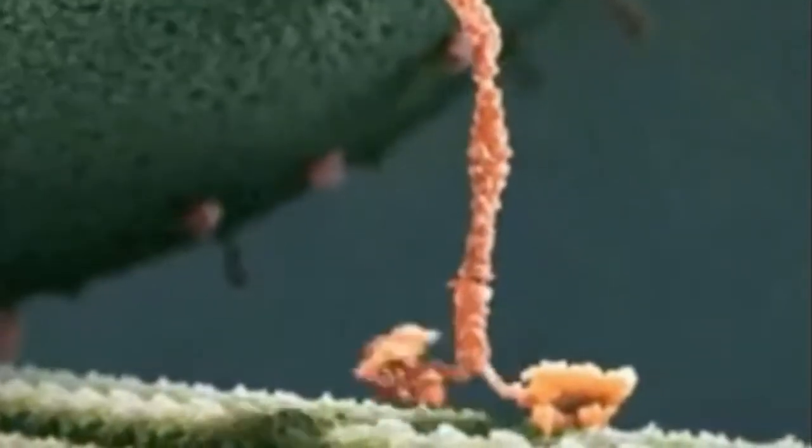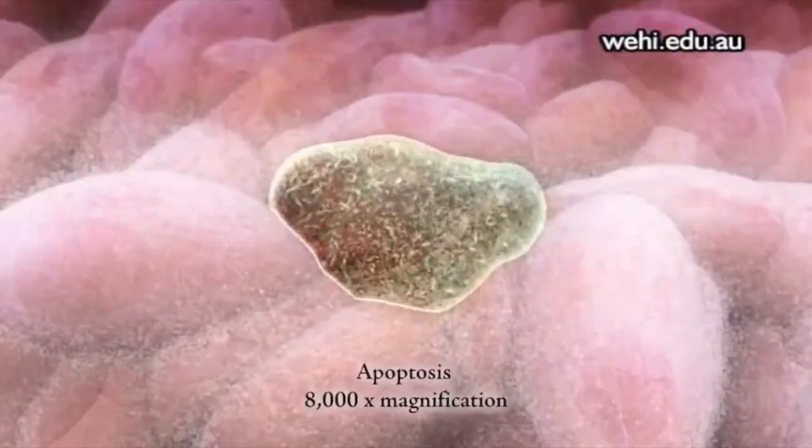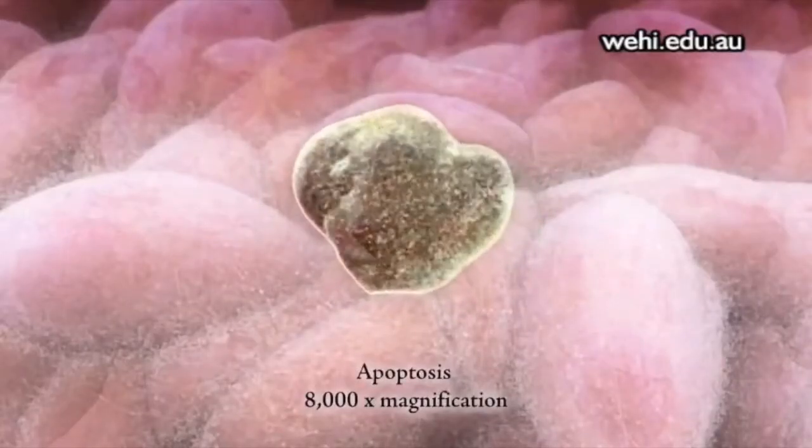At such a microscopic level of analysis, it is easy to see how the cell would go into chaos if this function began to falter.